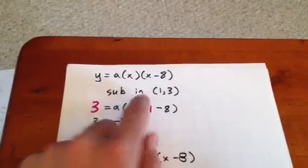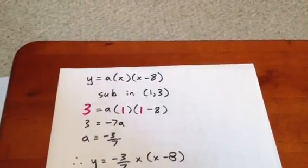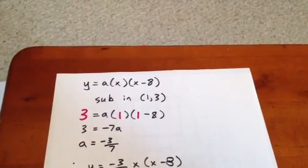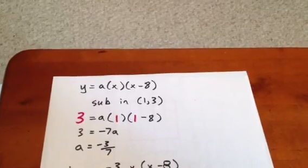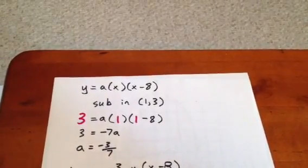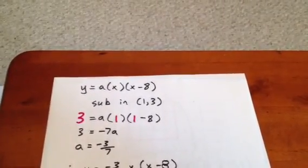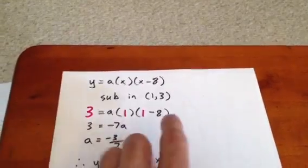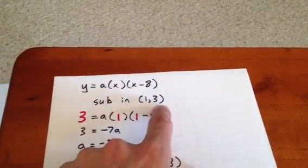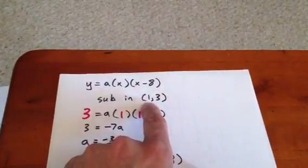At this point, we sub in 1, 3 because 1 meter from the left edge, in other words 1 meter horizontally, the parabola is 3 meters tall. In other words, it has a value of 3 vertically. So in terms of x and y, our coordinates there would be 1, 3.